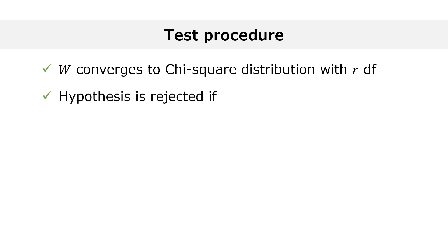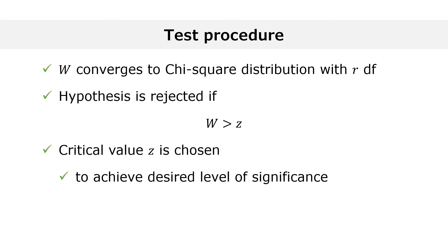The null hypothesis is rejected if the test statistic exceeds a predetermined critical value z. The critical value is chosen so as to achieve a desired level of significance by using the inverse cumulative distribution function of the chi-square distribution. Much more details about the testing procedure can be found on statlect.com.